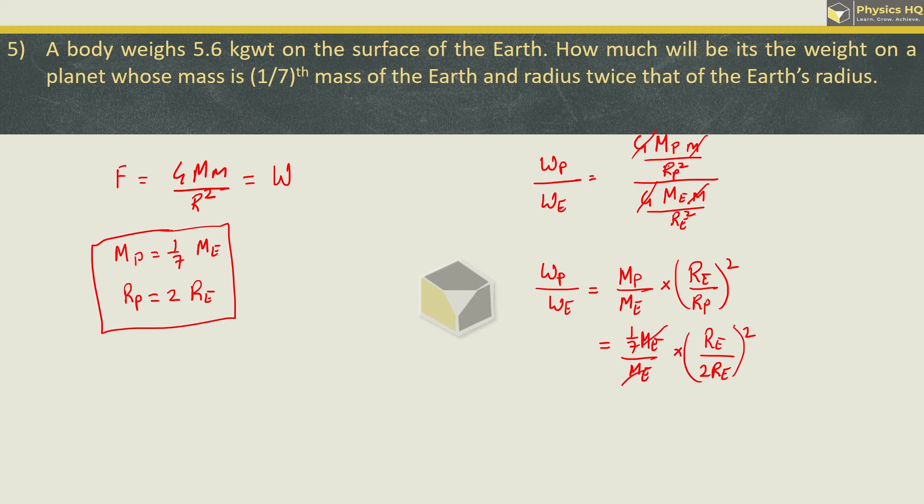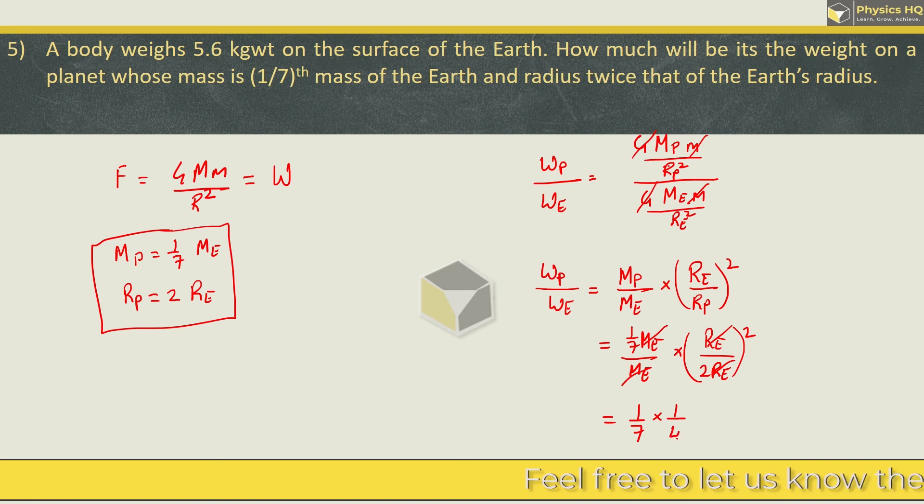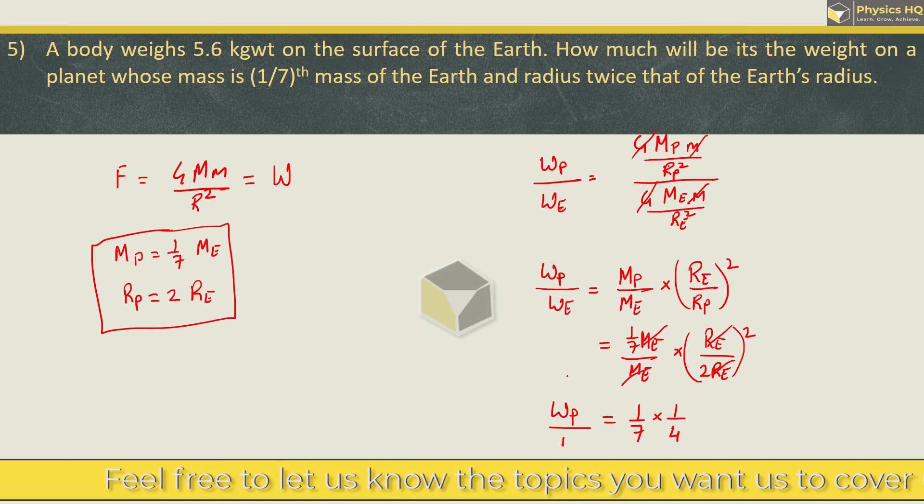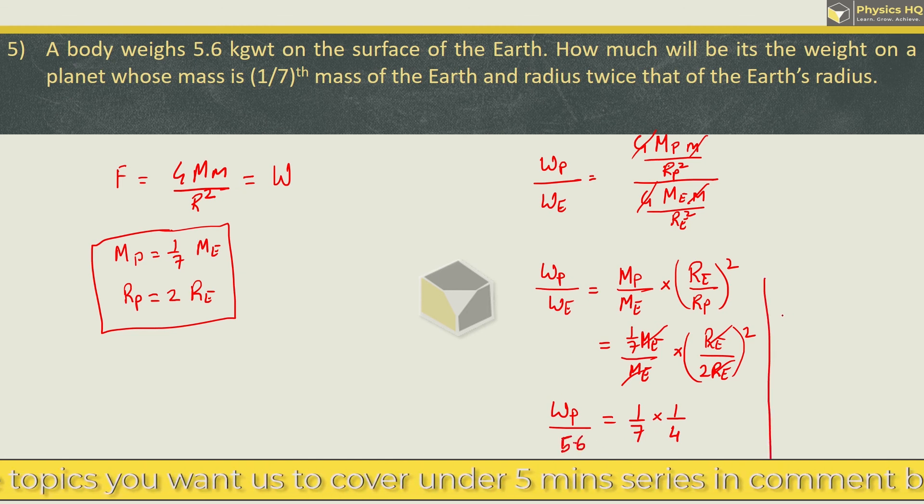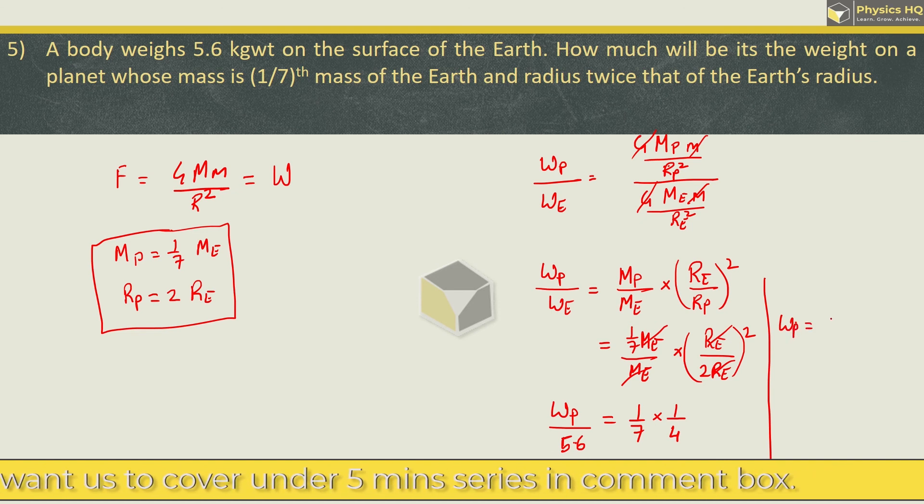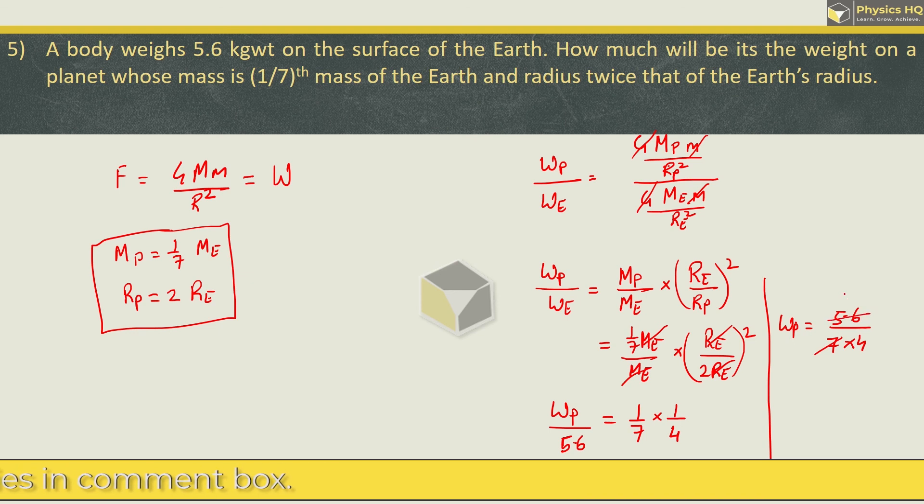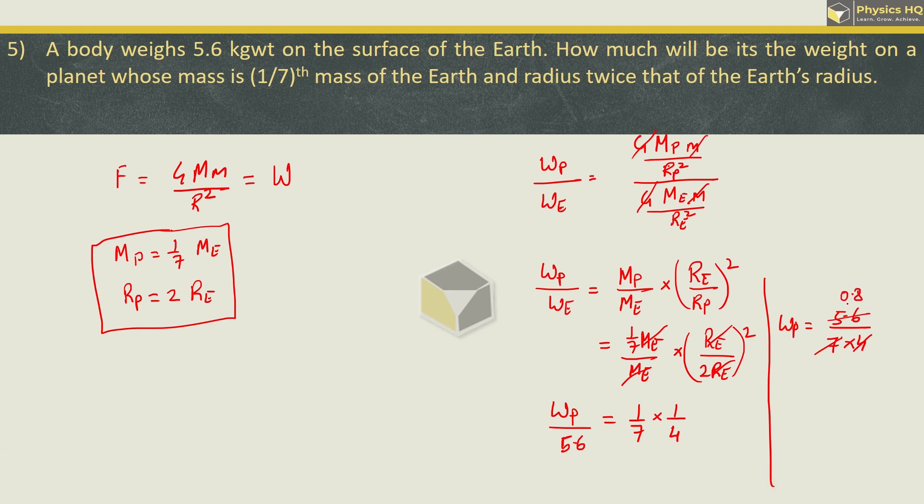From here, what we have is mass of that planet is one-seventh of the mass of earth, and radius of that planet is twice the radius of earth. So we get 1/7 × 1/4, which gives weight on that planet as 5.6 divided by 28, which equals 0.2 kg weight. Hope you all understood this.